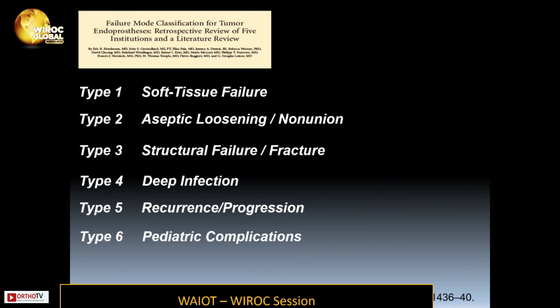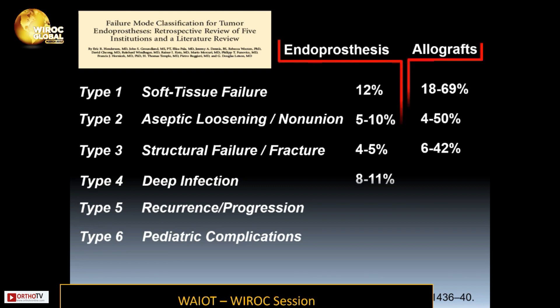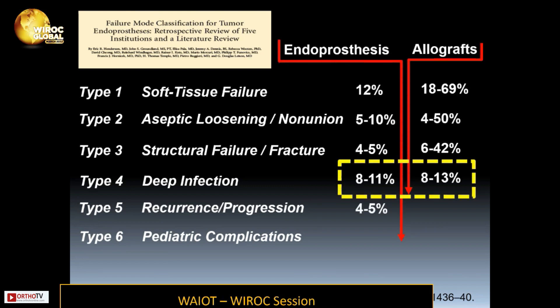Here are the common complication types for endoprosthetic reconstruction in oncology. These include endoprosthetics and allografts, and a type 4 complication — which is a deep infection — can occur in up to 8 to 13 percent of cases.